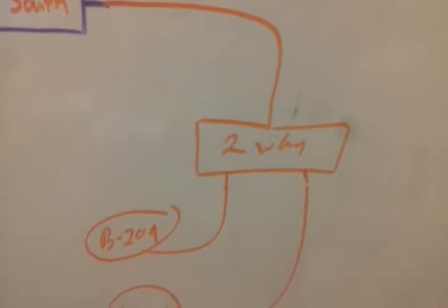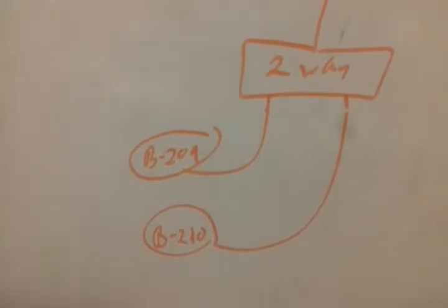The other line will also run south, go down the same hallway to a two-way splitter, and you can just go to B209 and B210.